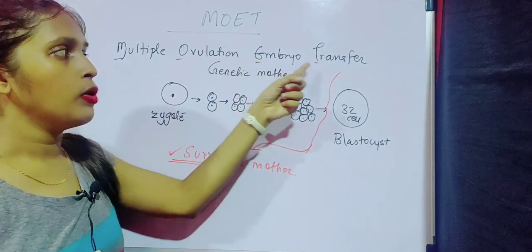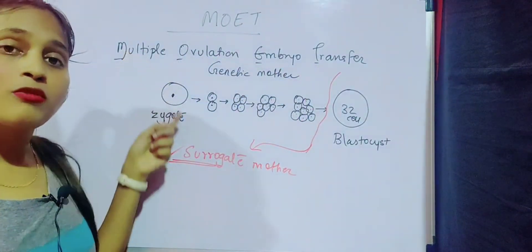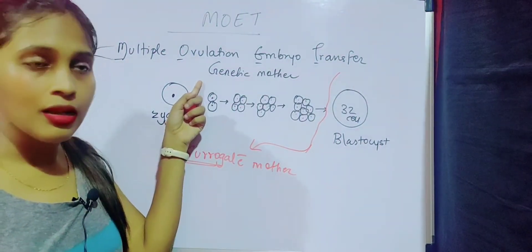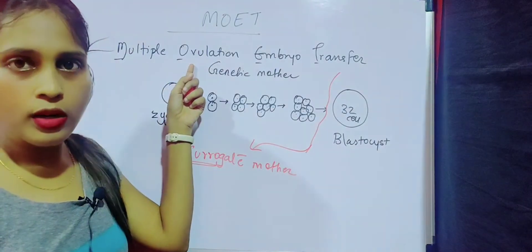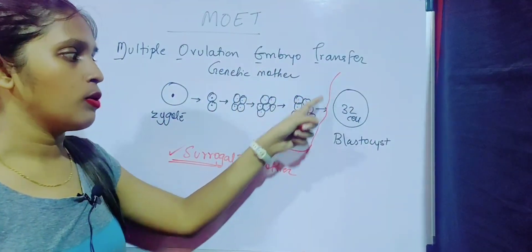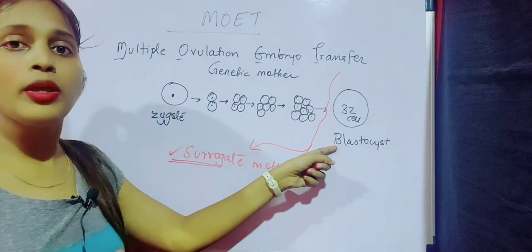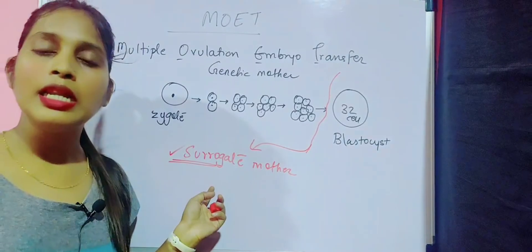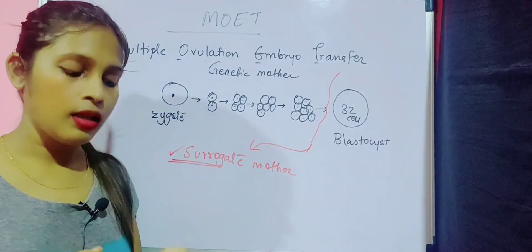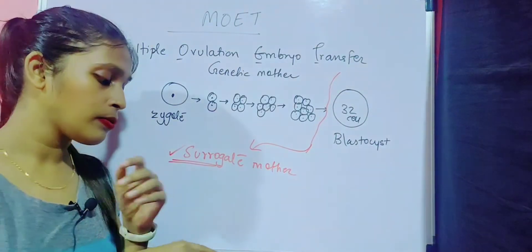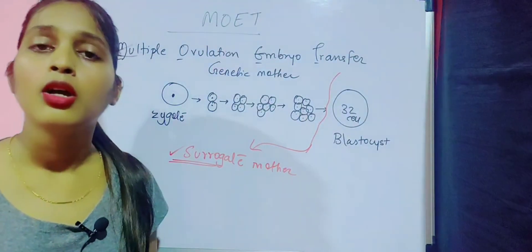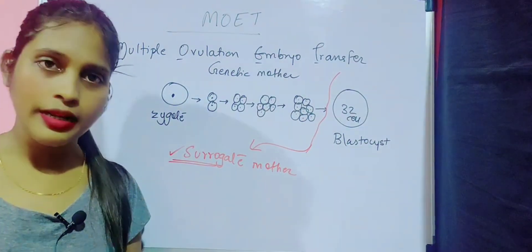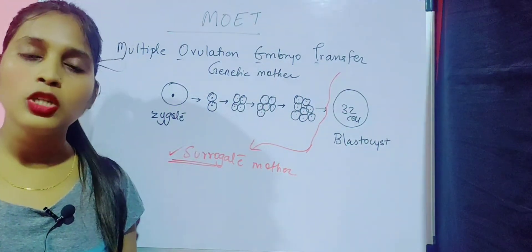In this way, as many progenies as possible can be obtained. That is Multiple Ovulation Embryo Transfer: 'multiple' because we get many progenies from many eggs; 'ovulation' is the maturation of the egg; 'embryo transfer' means the blastocyst — a growing embryo — is transferred to a surrogate mother for delivery. This helps cattle have good variety, quality, and quantity of yield.